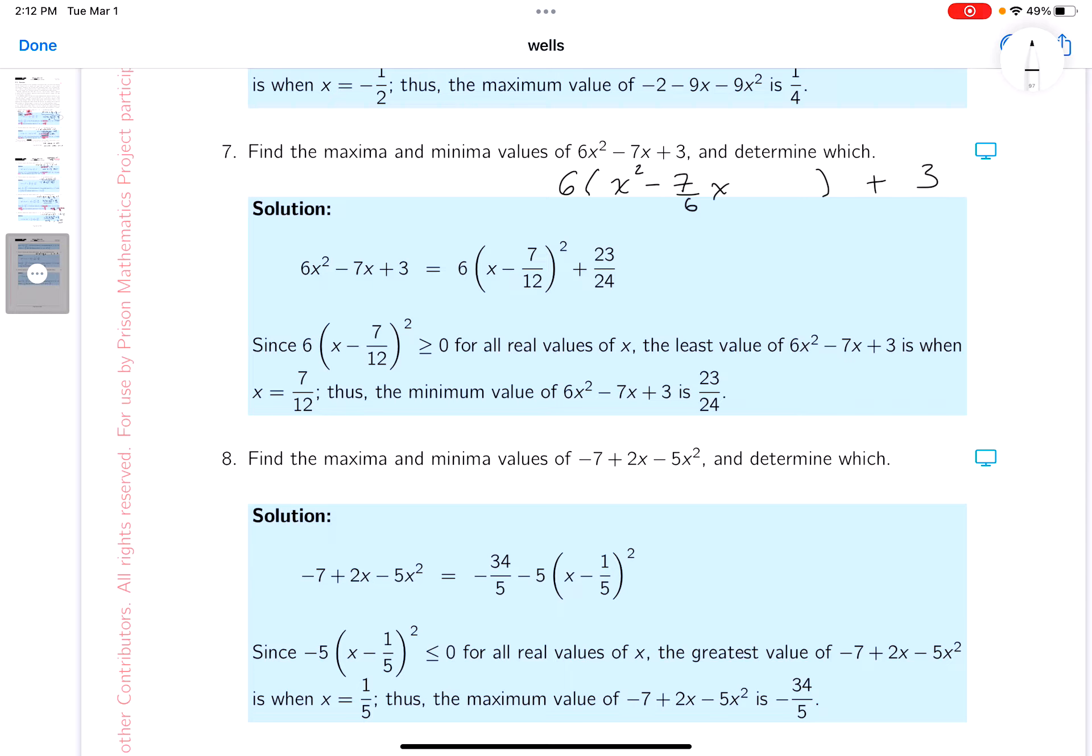I'm taking half of the coefficient on x and square it, and that would be 49 over 144.